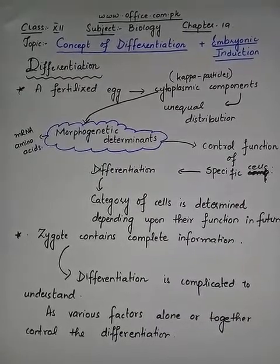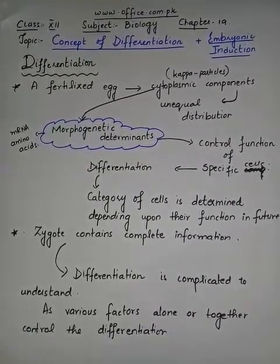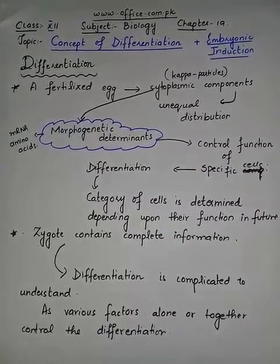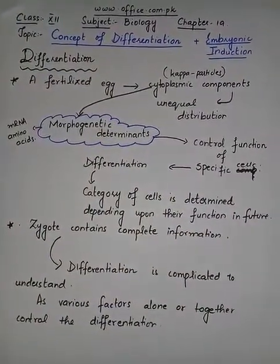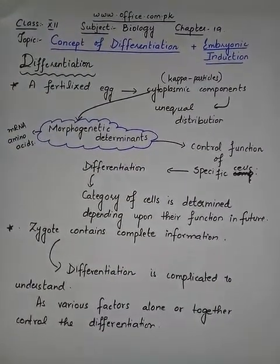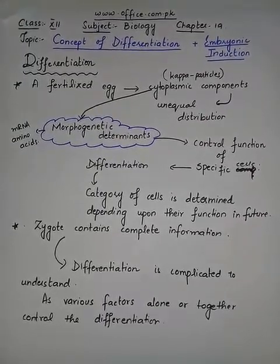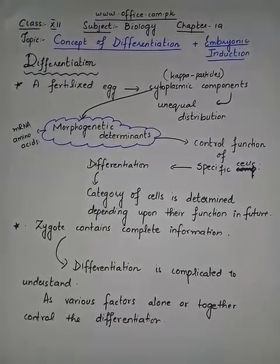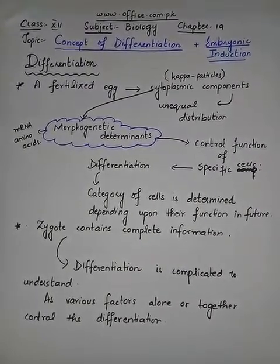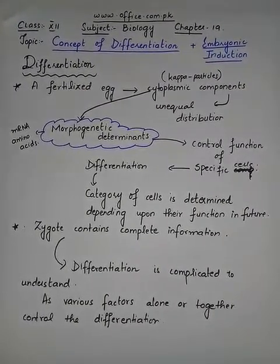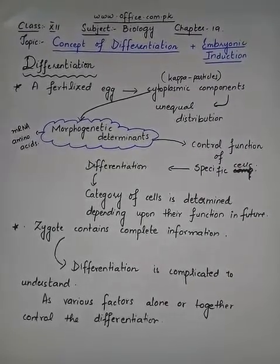Today we will continue this concept and we will see some experimental verifications. As we all know, developmental stages begin from the formation of the fertilized egg — when an egg is fertilized by a sperm, the resulting zygote is the starting point from where growth and development starts.